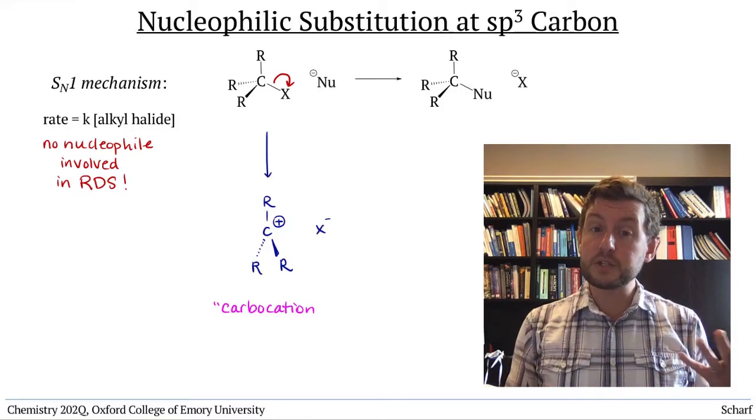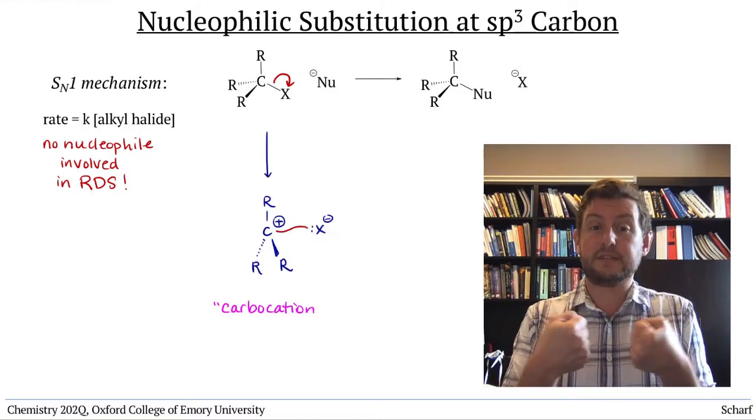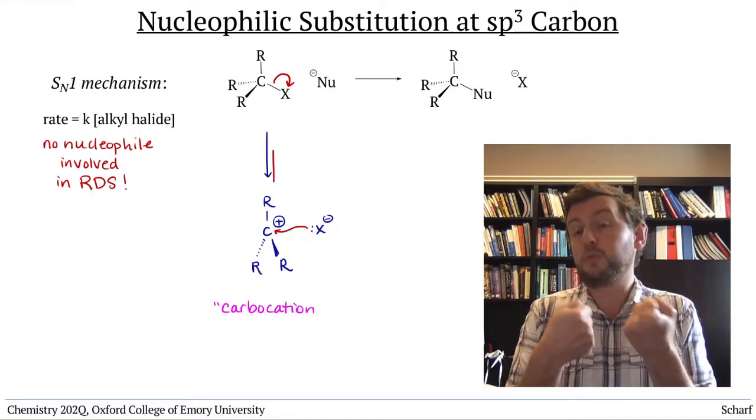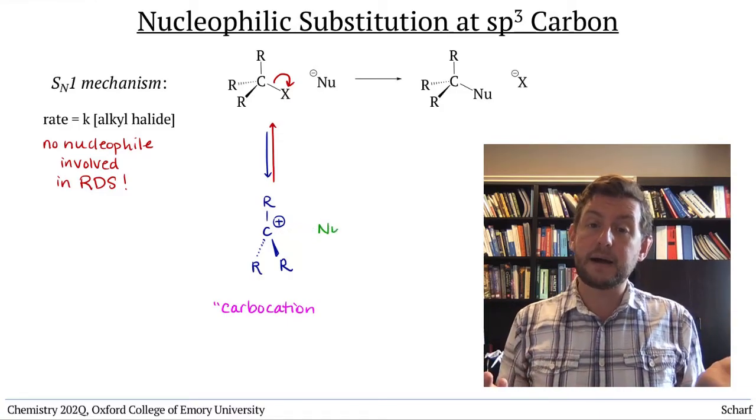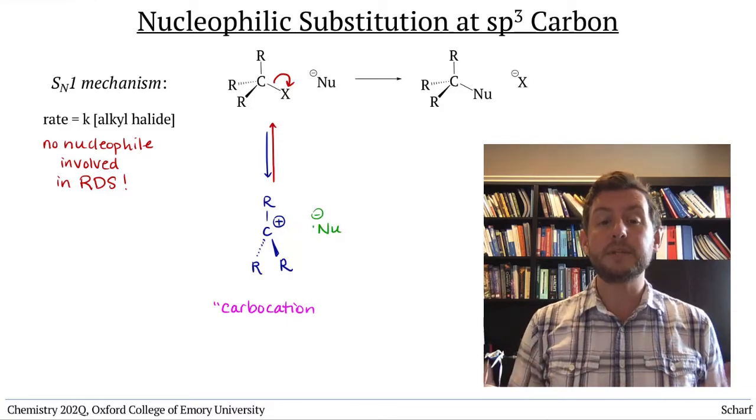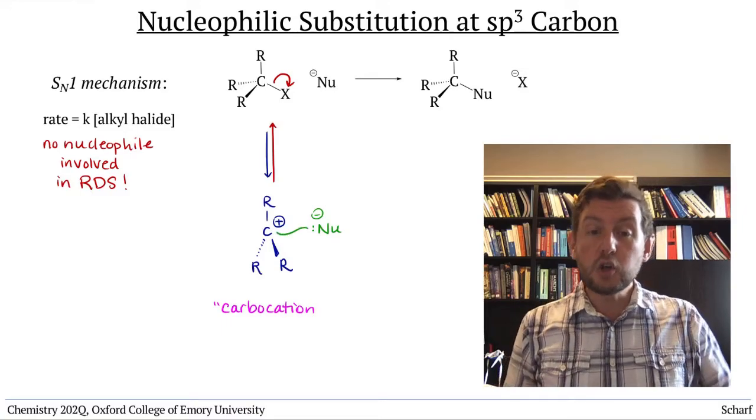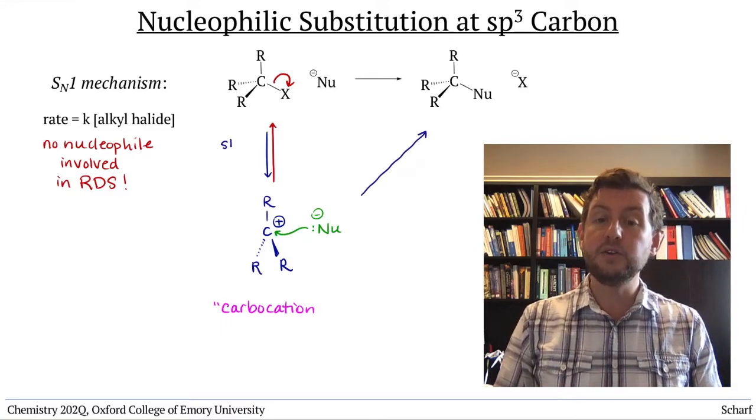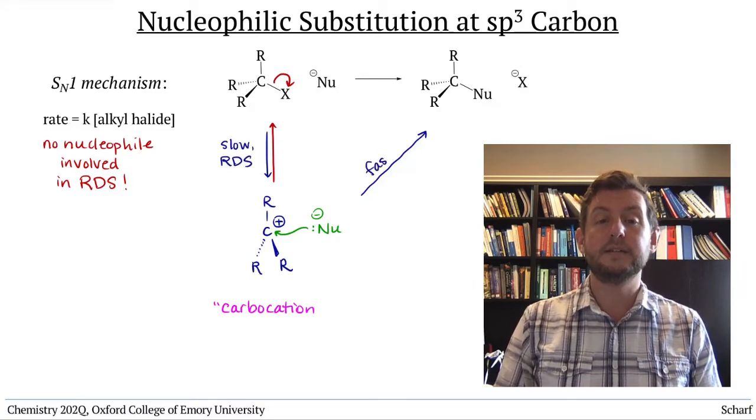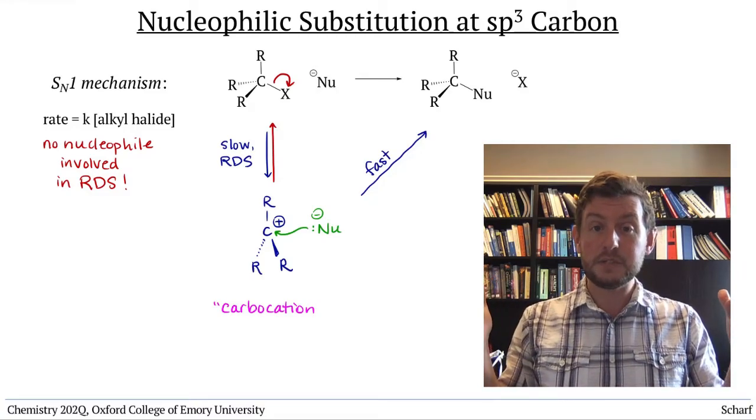The leaving group that just left could, of course, satisfy that electrophilicity and the bond could re-form. But if a nucleophile is nearby, it can intercept that carbocation, donating some electrons into that empty p orbital and making a new bond to that carbon. Voila! Substitution has occurred.